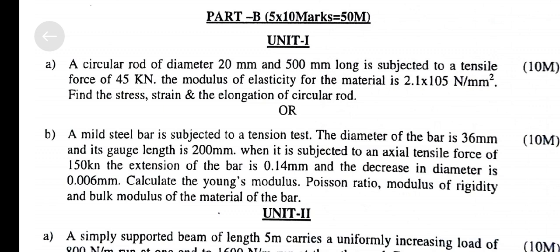Question B. A mild steel bar is subjected to a tension test. The diameter of the bar is 36mm and its gauge length is 200mm. When subjected to an axial tensile force of 150kN, the extension of the bar is 0.14mm and the decrease in diameter is 0.006mm. Calculate Young's modulus,